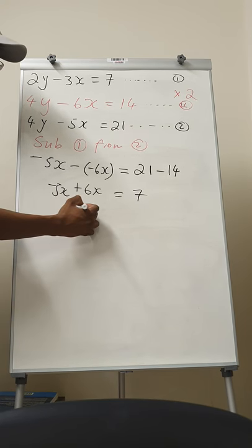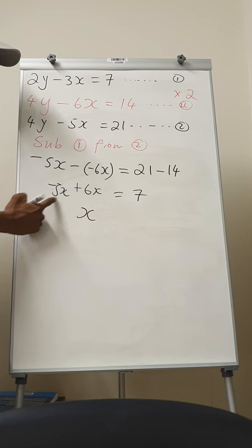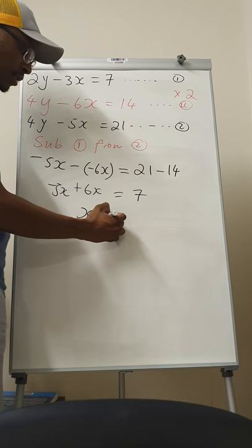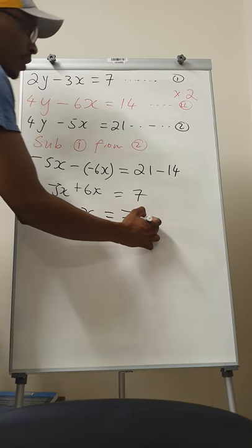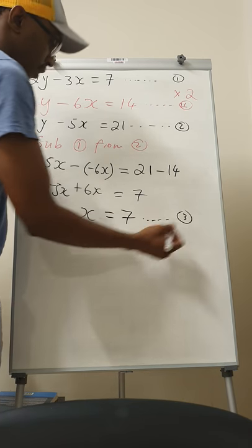So that will be positive x. Taking the sign of the bigger number and subtracting the smaller number from the bigger number, that will be equal to seven. So x is equal to seven. And then you can say this is equation number three.